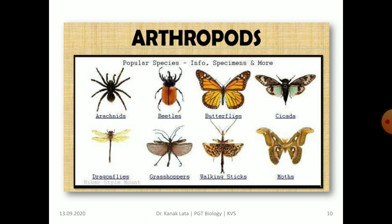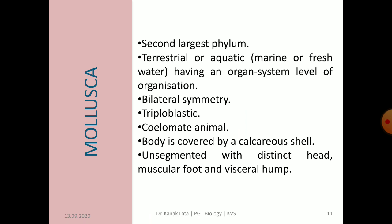Now another phylum is Mollusca. Mollusca is the second largest phylum. They may be terrestrial or aquatic, either marine or freshwater. The molluscs have organ system level of organization. The symmetry is generally bilateral in Mollusca and they are triploblastic. They are also coelomate animals. The body of molluscs is covered by a calcareous shell, and the body is usually differentiated into three regions: an anterior head with sense organs, a dorsal visceral hump, and a ventral muscular foot for locomotion.